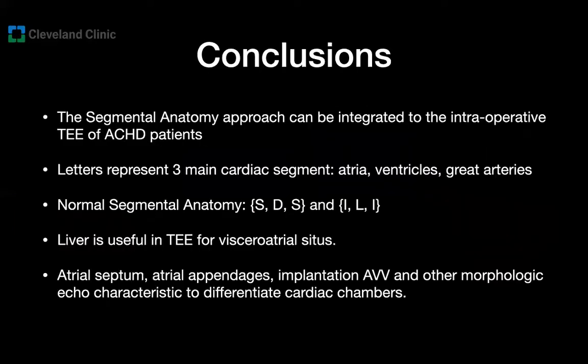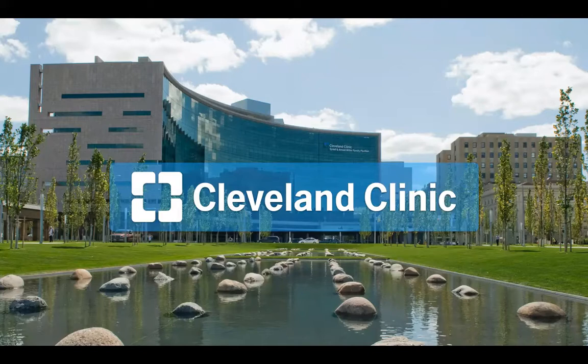I would like to conclude with this. The segmental anatomy approach can be integrated into the intraoperative TEE examination of adult patients with congenital heart disease. Remember that those three letters represent the main cardiac segments — the atria, the ventricles, and the great arteries. Remember also that normal segmental anatomy is either SDS (non-inverted) or ILI (inverted) — both are normal. The liver is very useful for figuring out the visceral atrial situs and is easy to find during TEE. Multiple morphologic features help us differentiate the cardiac chambers, including the atrial septum, the appendages, and the implantation of the AV valve, all of which we can easily assess during the TEE examination. Thank you very much, and I will be happy to answer any questions at the end of the presentation.